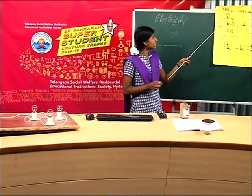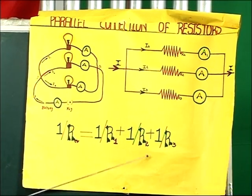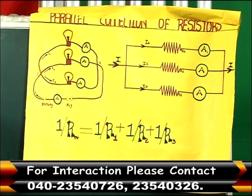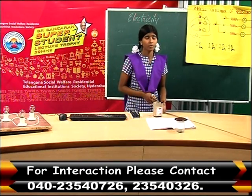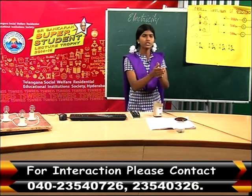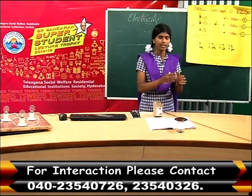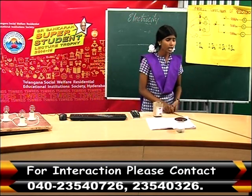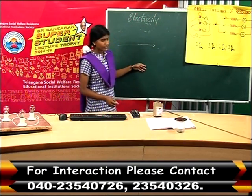In parallel connection, 1 by equivalent resistance is equal to 1 by R1 plus 1 by R2 plus 1 by R3. This type of parallel connection is used in households so that there is no waste of electricity, because electricity is very important and we are using it in many fields.